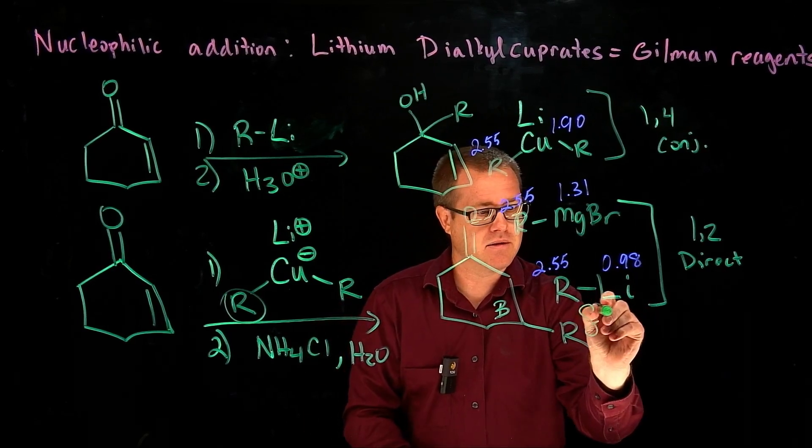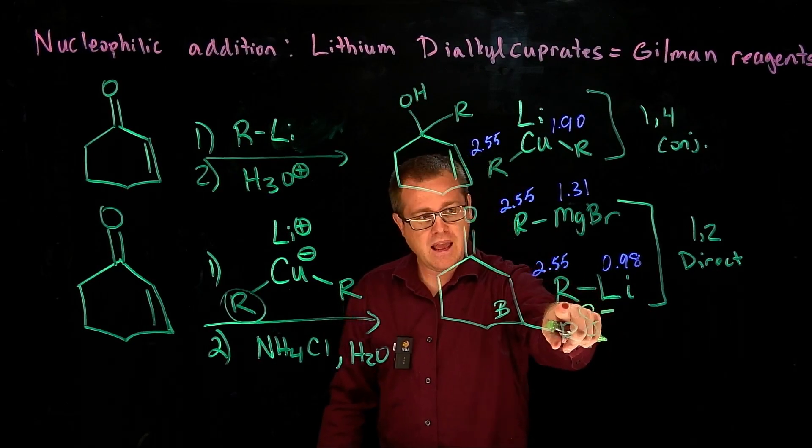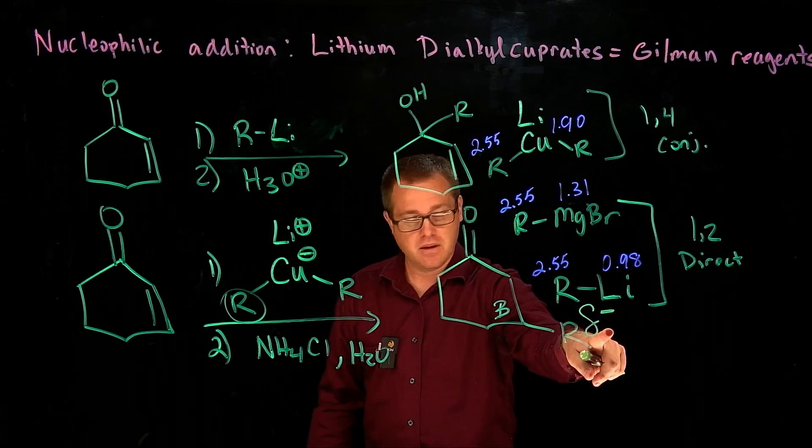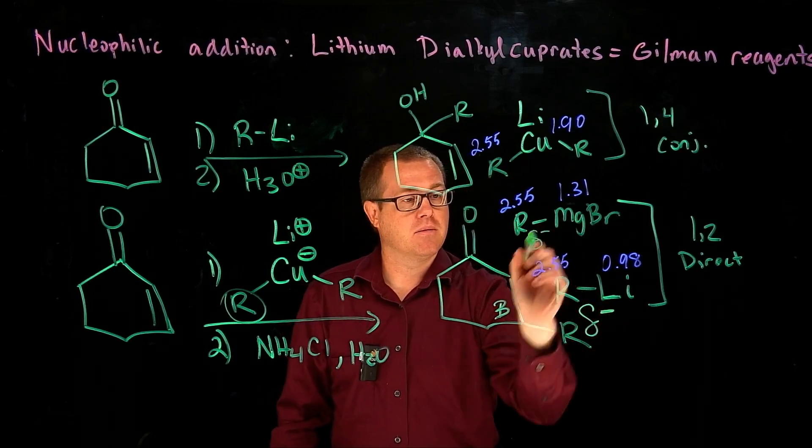And this one's going to have a smaller partial negative. And then this R group right here is going to have the smallest,